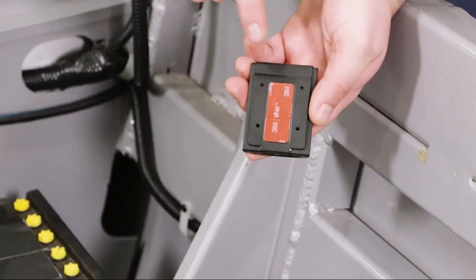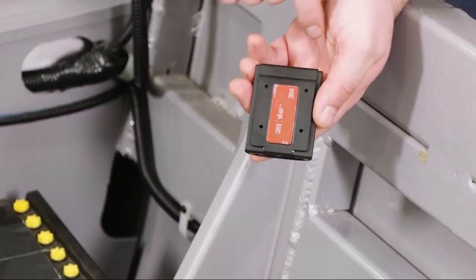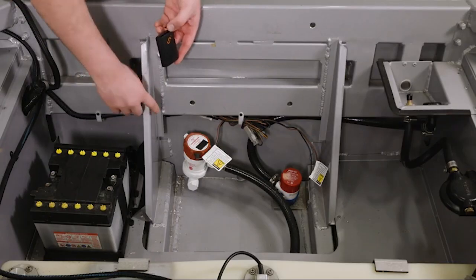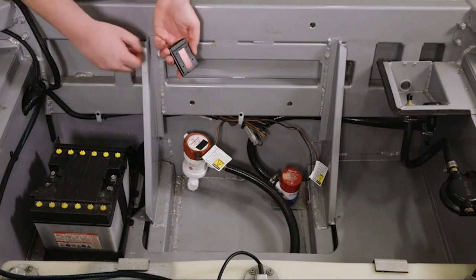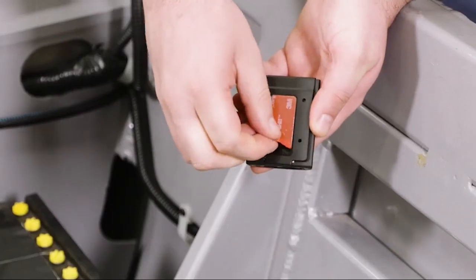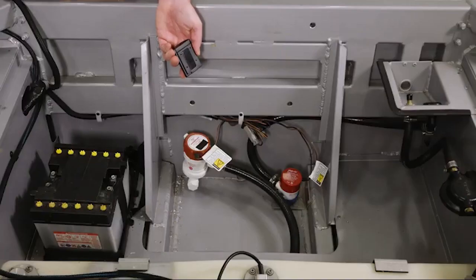The sensor can be mounted either using 3M tape or mounting screws. In this scenario, we have a flat, smooth, clean surface, so we'll be using the 3M tape. Peel the wax paper off the 3M tape and firmly apply the module in place.